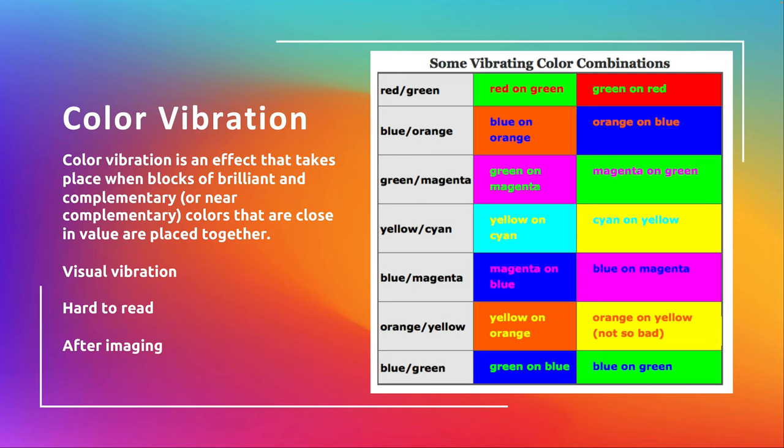This can be done on purpose — sometimes you want that color vibration. In the eighties and nineties, there were these really intense geometric patterns that purposely used obnoxious colors and these relationships to give you that sense of vibration, that sense of motion. Sometimes you use these on purpose; sometimes you don't mean to, and then you need to adjust.